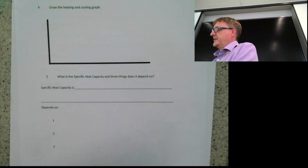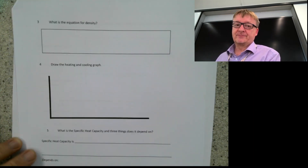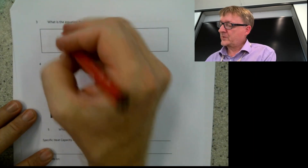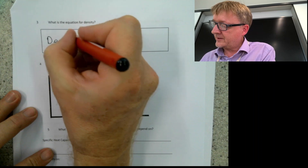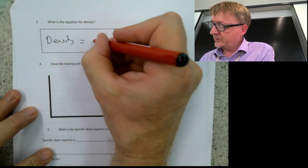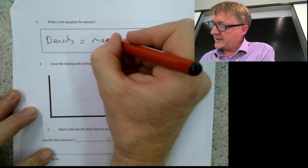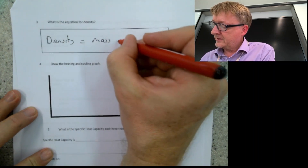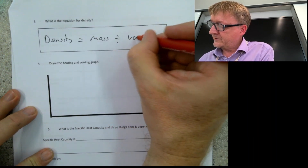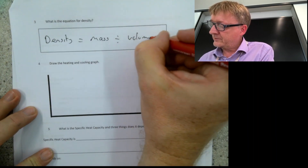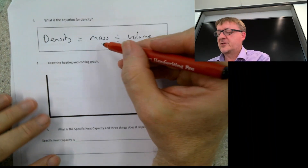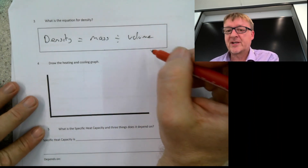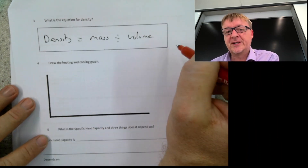Number three: what is the equation for density? Density equals mass divided by volume. No units are specified here because mass could be kilograms or grams, and volume could be centimetres cubed or metres cubed.